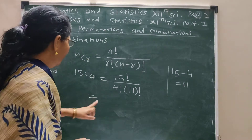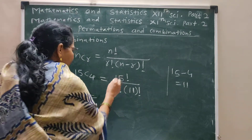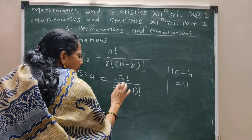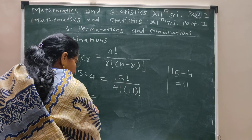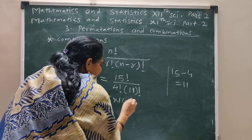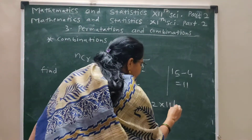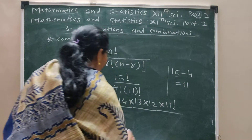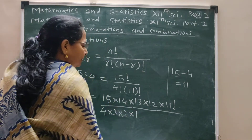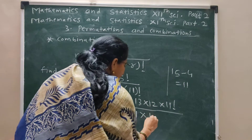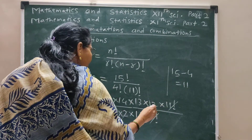The next method: write 15 down to the largest value among these two denominators. The largest is 11. So write 15 factorial as 15, 14, 13, 12, 11 factorial. Write 4 factorial as 4, 3, 2, 1. The 11 factorial terms get cancelled.